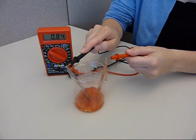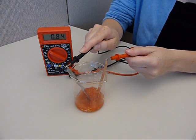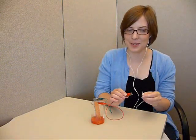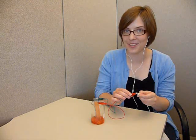As you can see, this tomato battery is producing 0.84 volts of electricity. You can connect the circuit to the end of a pair of earphones and you'll be able to hear the crackle of electricity passing through.